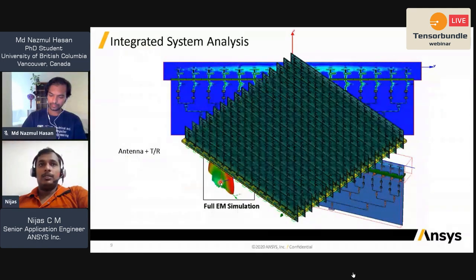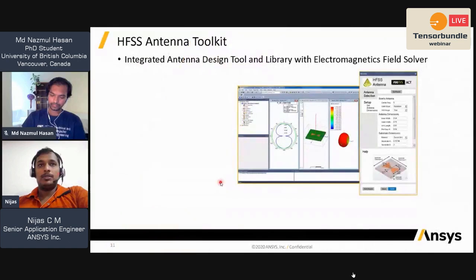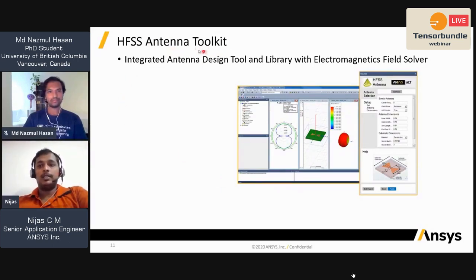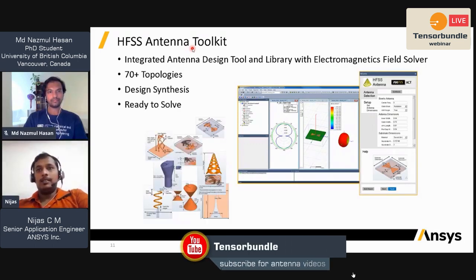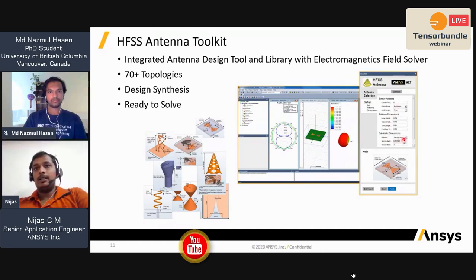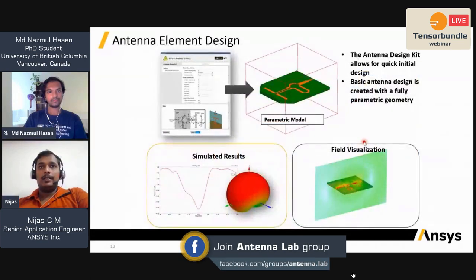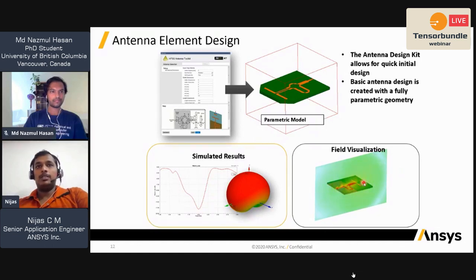The antenna array design step-by-step process starts with antenna selection. HFSS has an antenna toolkit — free with HFSS for about seven years now — with about 80 antennas. You select the antenna, enter the center frequency and material, and it automatically calculates dimensions and creates the geometry. You just run the analysis and can then see S-parameters, radiation patterns, and field distributions in post-processing.